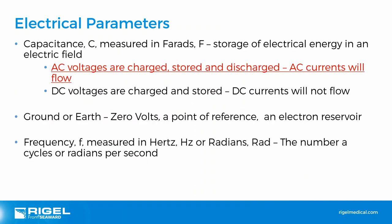A few more important terms for electrical safety. Capacitance is the storage of electrical energy — AC currents will flow through a capacitor but DC currents will not. Ground or earth, depending on region, is zero volts — effectively an electron reservoir. Frequency, measured in hertz, is the number of cycles per second in an AC circuit. In electrical safety this is important because mains frequency closely matches electrical impulses in the body such as muscles, nerves and the heart. Mains frequency is 50 or 60 hertz worldwide.